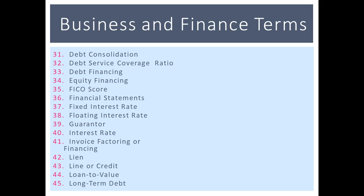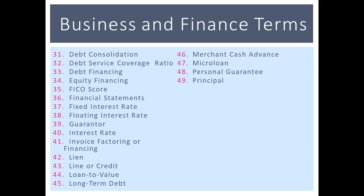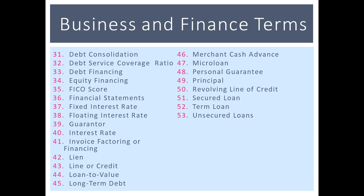Long-term debt is any loan product with a total repayment schedule lasting longer than one year. A micro loan is made through non-profit community-based organizations for amounts under fifty thousand dollars. Personal guarantee is similar to a guarantor — if you are a new business seeking financing, you may be asked by a lender to sign a personal guarantee. The principal is the original amount received from a loan; a loan instrument consists of three parts: principal, interest, and fees. A revolving line of credit is a funding option similar to a standard line of credit. A secured loan requires some form of security, whereas an unsecured loan is not backed by collateral and represents a higher risk for lenders.